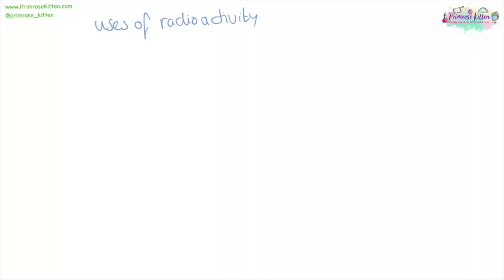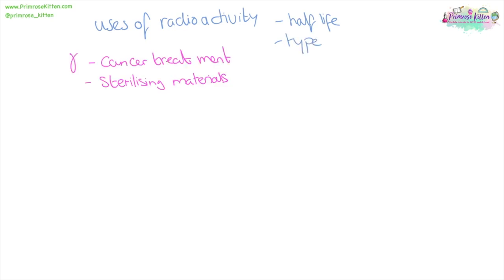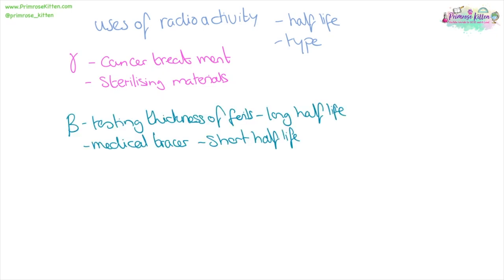The uses of radioactivity are quite varied, and what dose you use depends on the half-life and the type of radiation. Gamma radiation can be used for cancer treatment and sterilising materials because it is very good at killing cells — and for medical equipment it needs a very long half-life. Beta radiation is used for testing the thickness of foil, carpet, or cardboard being made: if too much beta gets through it's too thin, if not enough gets through it's too thick — this needs a long half-life. Whereas for a medical tracer we want a short half-life so it gets out of the body quickly. Alpha radiation is used in smoke alarms and again needs a long half-life.